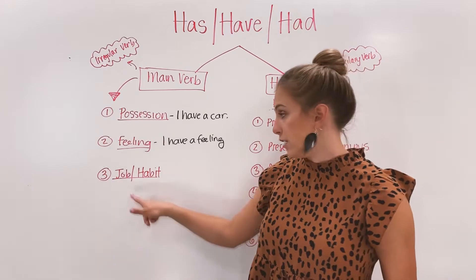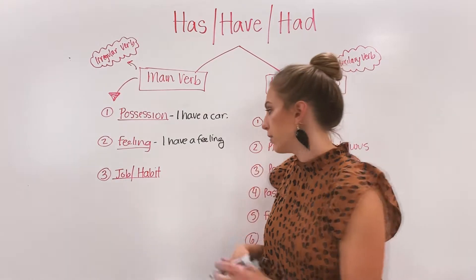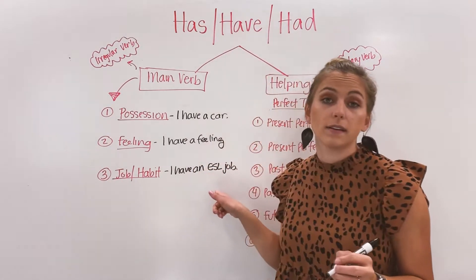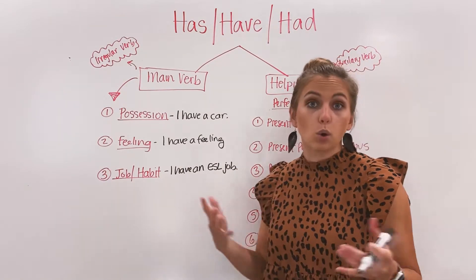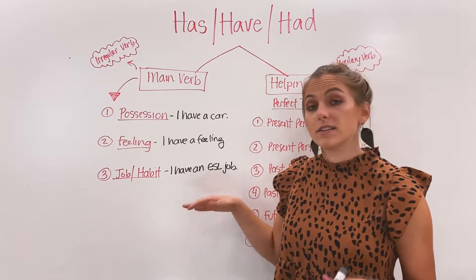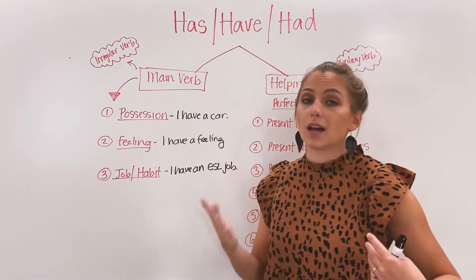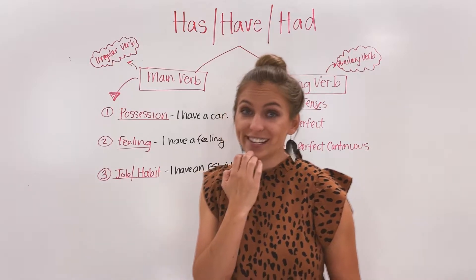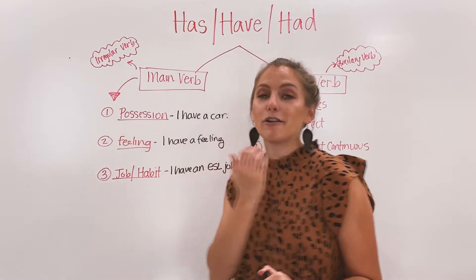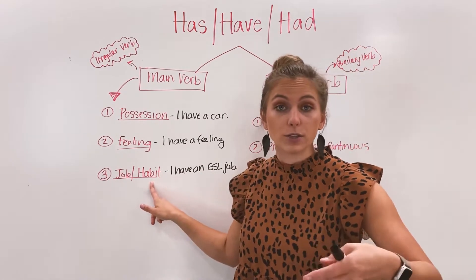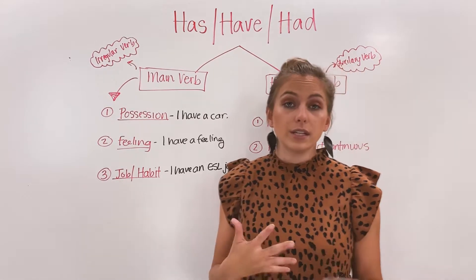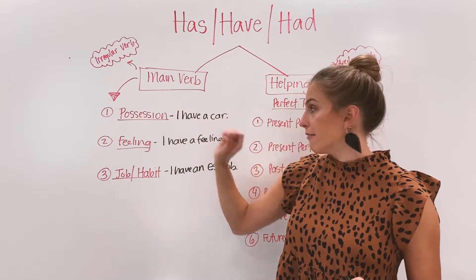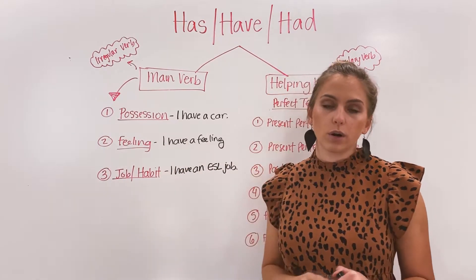Number three, you can have a job or a habit. I have an ESL job — I have a job in Ohio as an ESL coordinator, for example. Or you can have a habit, something that you do a lot. Maybe it's a bad habit, like maybe you like to bite your nails. You can say: I have a bad habit of biting my nails. Or it could be a positive habit or routine — I have a routine that I work out three days a week.